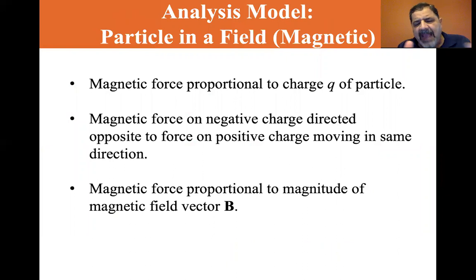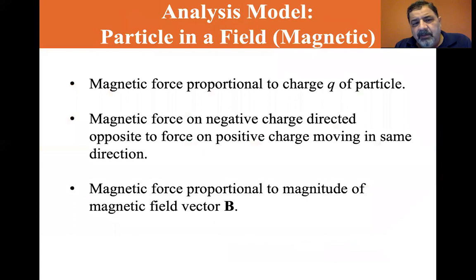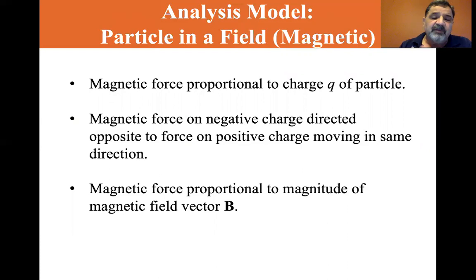We have protons and electrons — how do they act in a magnetic field? The magnetic force on a charge is proportional to the charge Q of the particle. The magnetic force on a negative charge is directed opposite to the force on a positive charge moving in the same direction. The magnetic force is proportional to the magnitude of the magnetic field vector B.